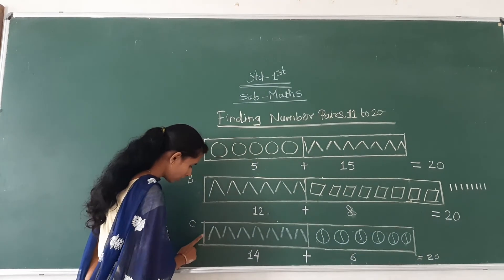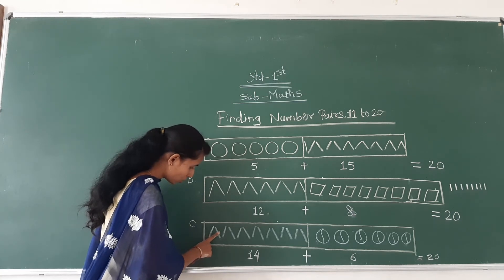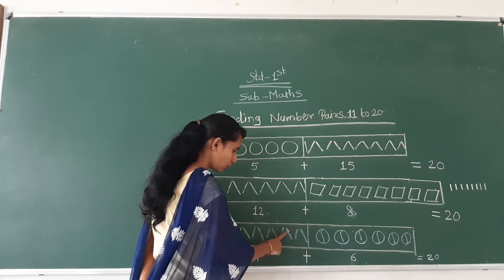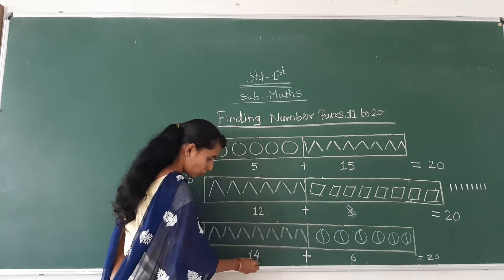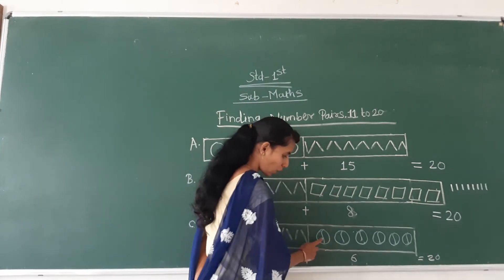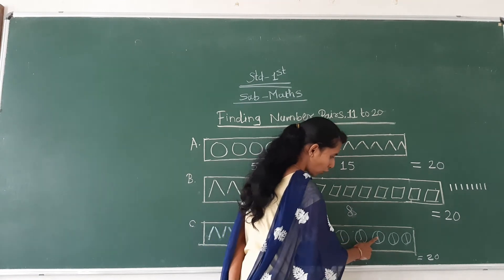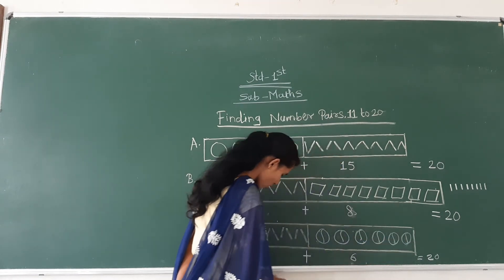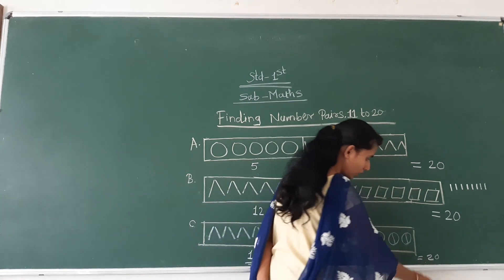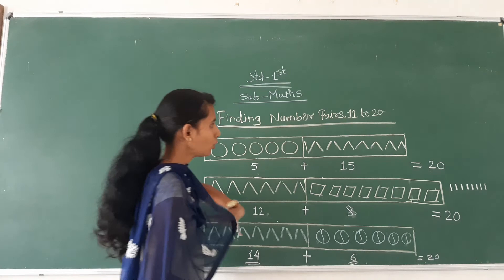And last one, example. How many lines here? 1, 2, 3, 4, 5, 6, 7, 8, 9, 10, 11, 12, 13, 14. Fourteen lines here. And in this box, how many boxes here? 1, 2, 3, 4, 5, 6. 14 plus 6, how many counting? 20. We find the number there, 11 to 20.